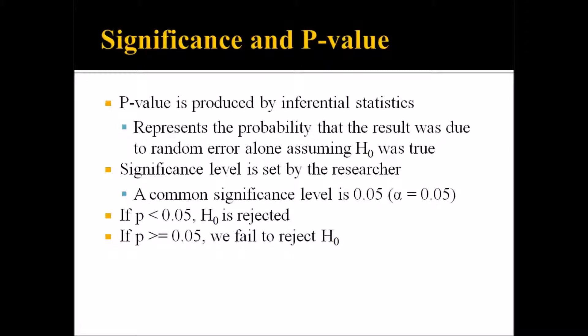In terms of whether we reject the null hypothesis or fail to reject it, we consider the p-value produced by the statistic. If the p-value is less than 5%, the null hypothesis is rejected and the alternative hypothesis, which states there is a difference, would be accepted. If the p-value is greater than or equal to 5%, we fail to reject the null hypothesis — or, as is sometimes stated, we accept the null hypothesis — and therefore reject the alternative hypothesis. So if the p-value is greater than or equal to 0.05, we would assume there is no difference between the two groups.